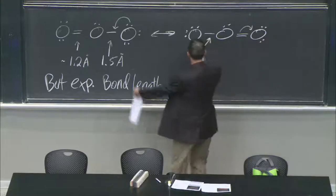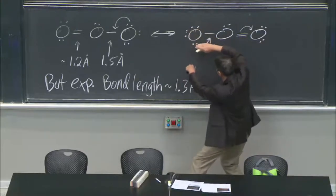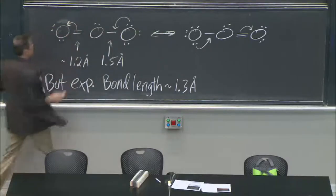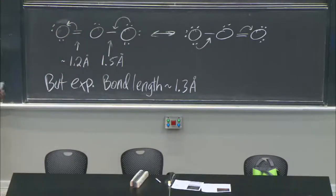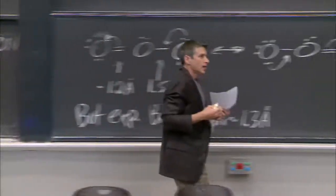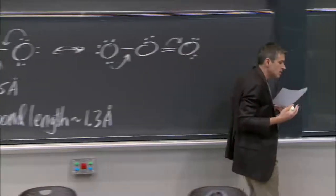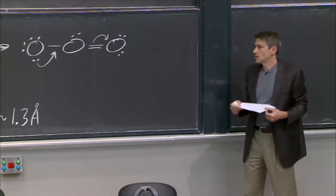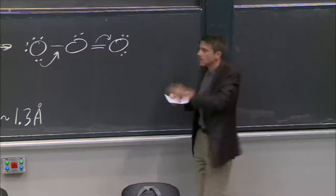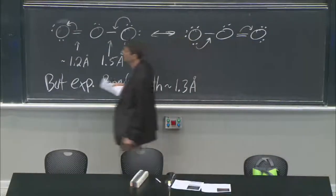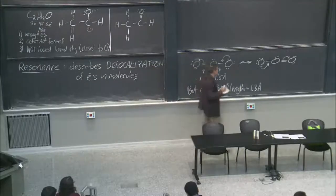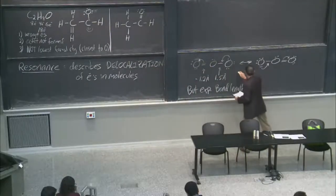You can look at your resonant structures and realize how the changes in electrons happened. Those curvy arrows help us just see how the changes in the electrons happened in these resonant structures.